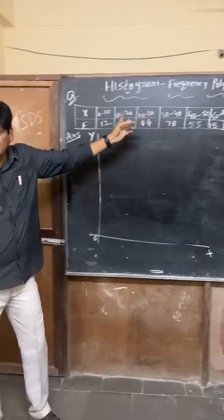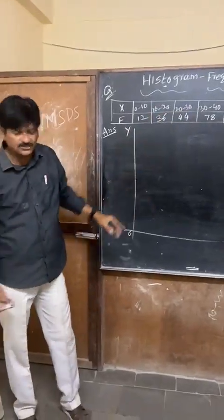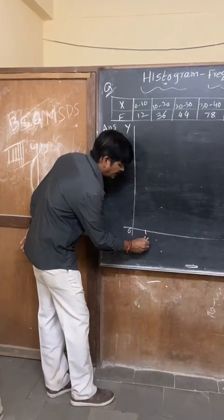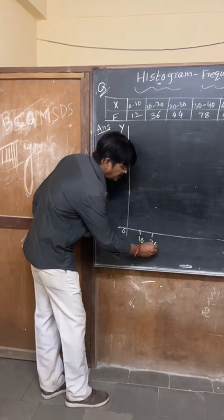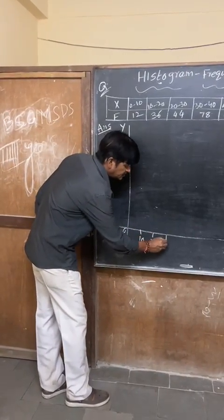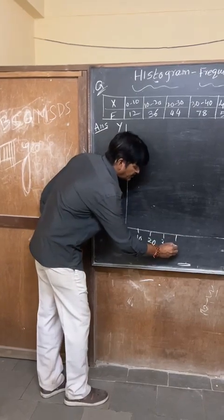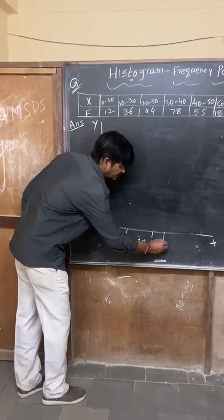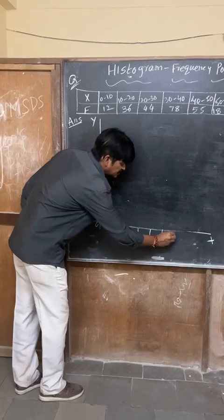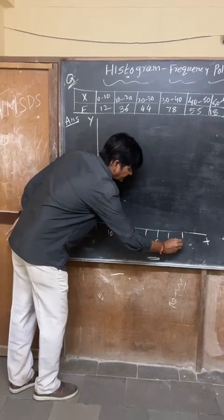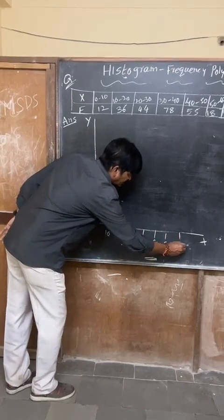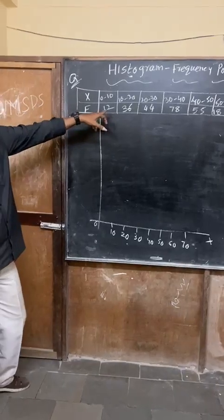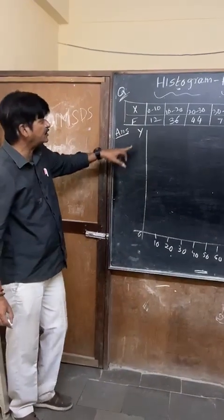On the x-axis, I am going to take values like this: 10, 20, 30 — where do I have to take up to? Tell me. 50, 60, 70. Yes, whatever you said, it's correct. And here, if you see the frequency, I am going to take that here.